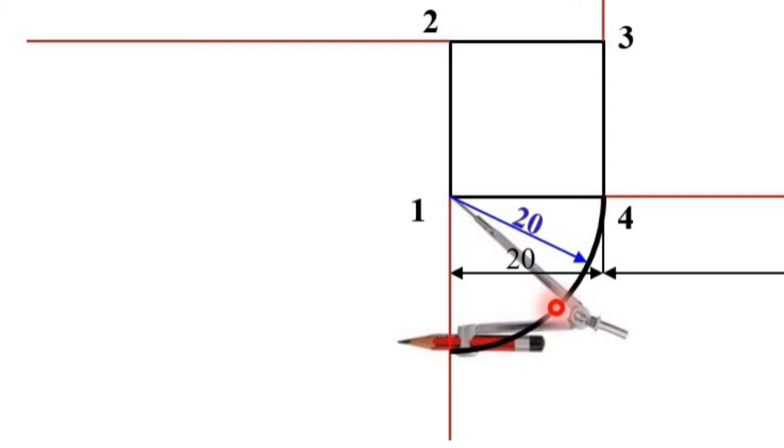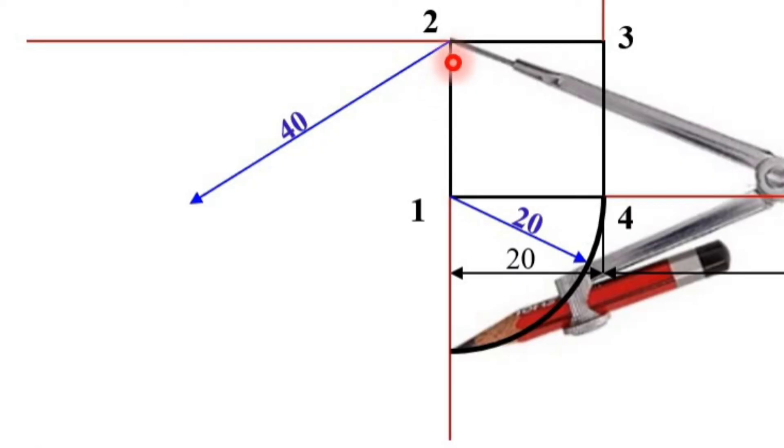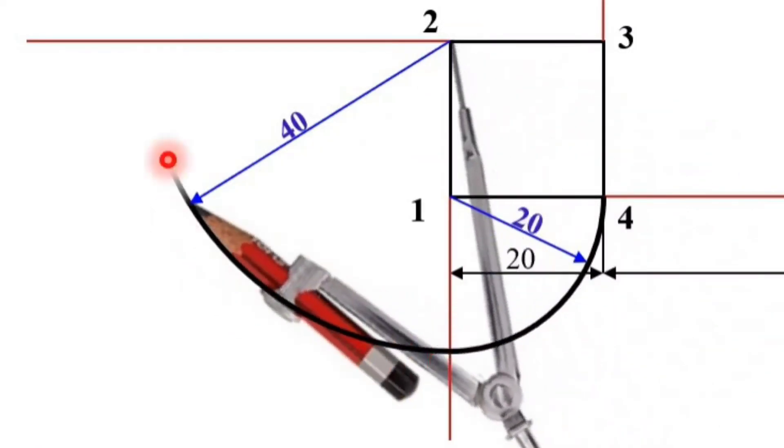Then can you imagine what should be the next step? Yes, definitely. We have to take two as the center and radius exactly equal to 40 mm. That means from here to here. So we have to take two as the center and draw the arc.